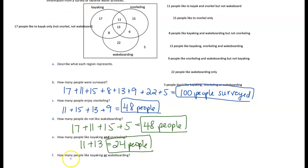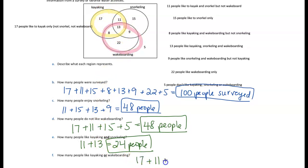The last part: how many people like kayaking or wakeboarding? 'Or' is inclusive, so it includes people who like kayaking, people who like wakeboarding, or people who like both. Any number within the kayaking or wakeboarding sets counts: 17 + 11 + 8 + 13 + 9 + 22. When we add all of that together, we get 80 people.